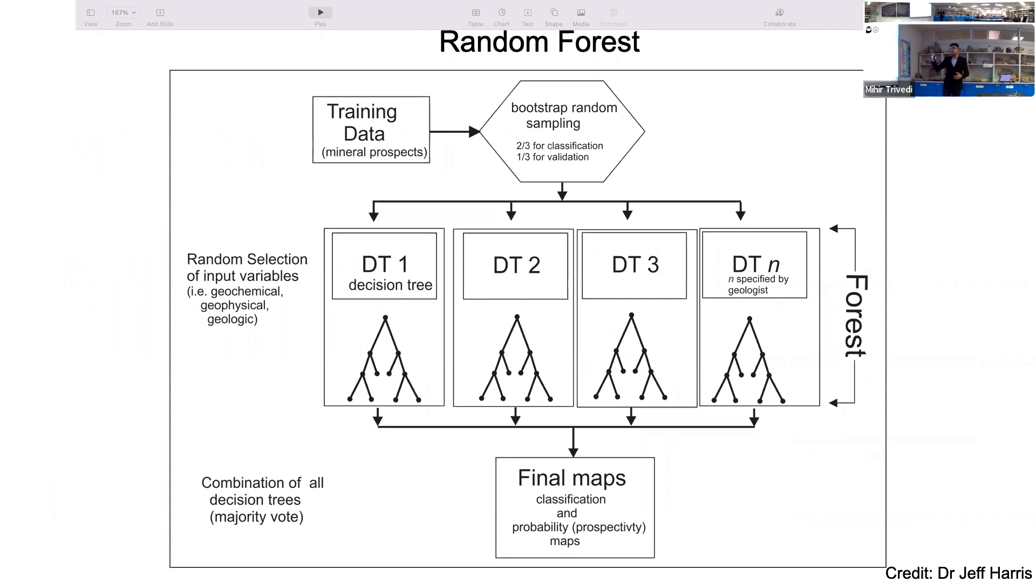To overcome that con, we have used random forest, which is a combination of decision trees. In the input parameters, we have used geochemical, geophysical, and geologic data. We have built different decision trees and taken a collection of trees. The combination of all the decision trees, we have taken majority vote, and then we used that data to predict mineral prospectivity maps.